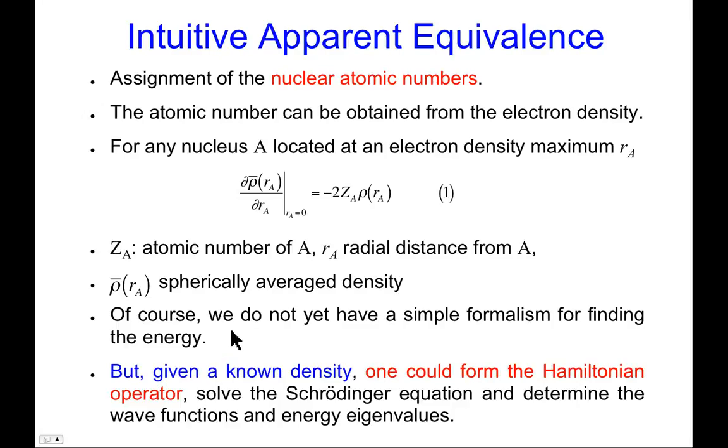Of course, we do not yet have any formalism for finding the energy from the electron density directly, but now we've basically seen that if we were given a density, we could find all the nuclear positions, assign the atomic numbers, integrate the density over all space. That'll give us the total number of electrons. And that's what we needed in order to solve the Schrödinger equation. Where are the atoms and how many electrons are there? So we could, in fact, determine the wave functions and energy eigenvalues that way.